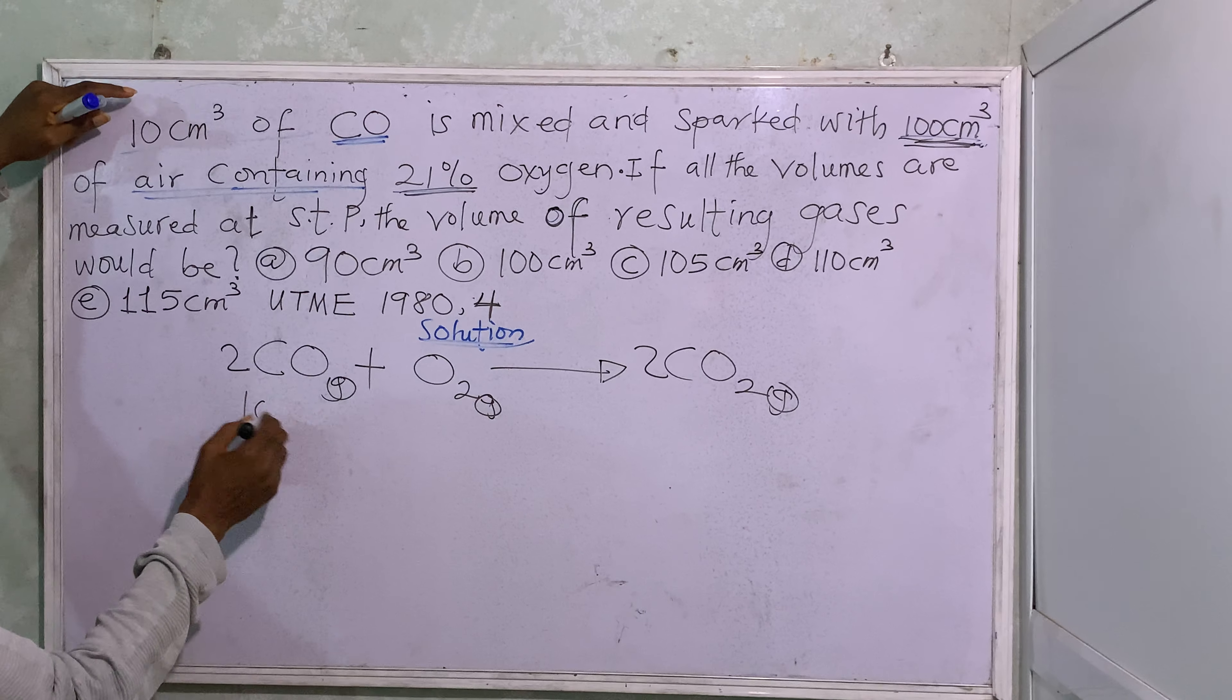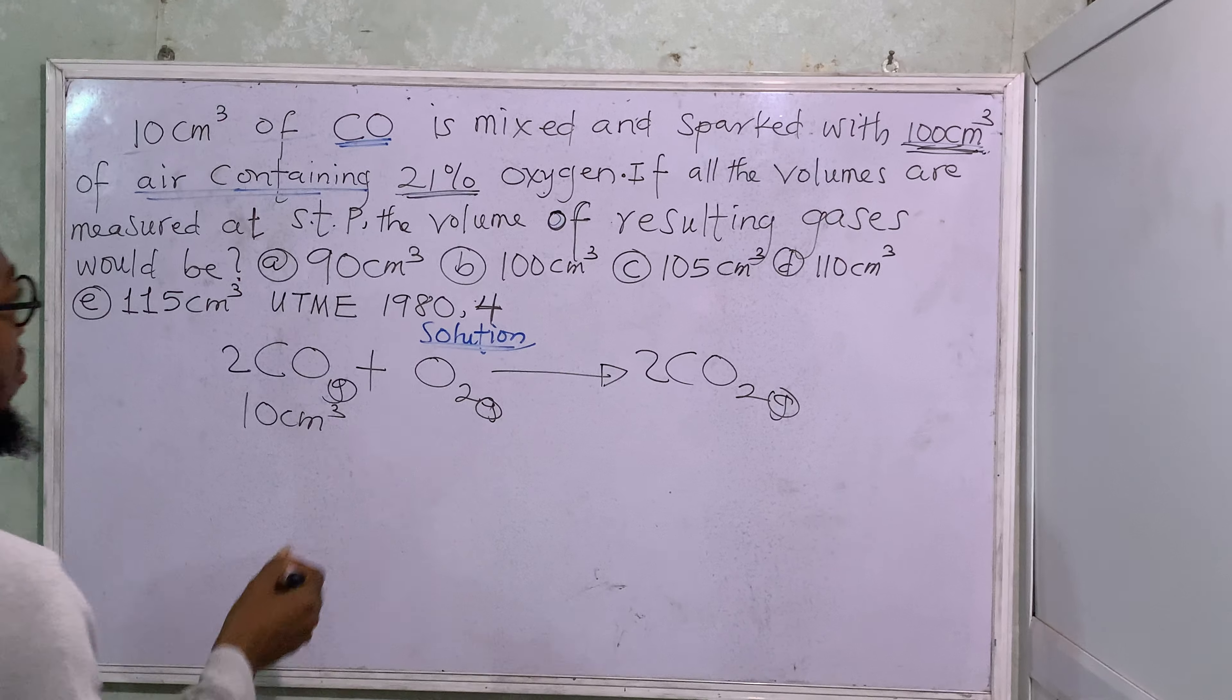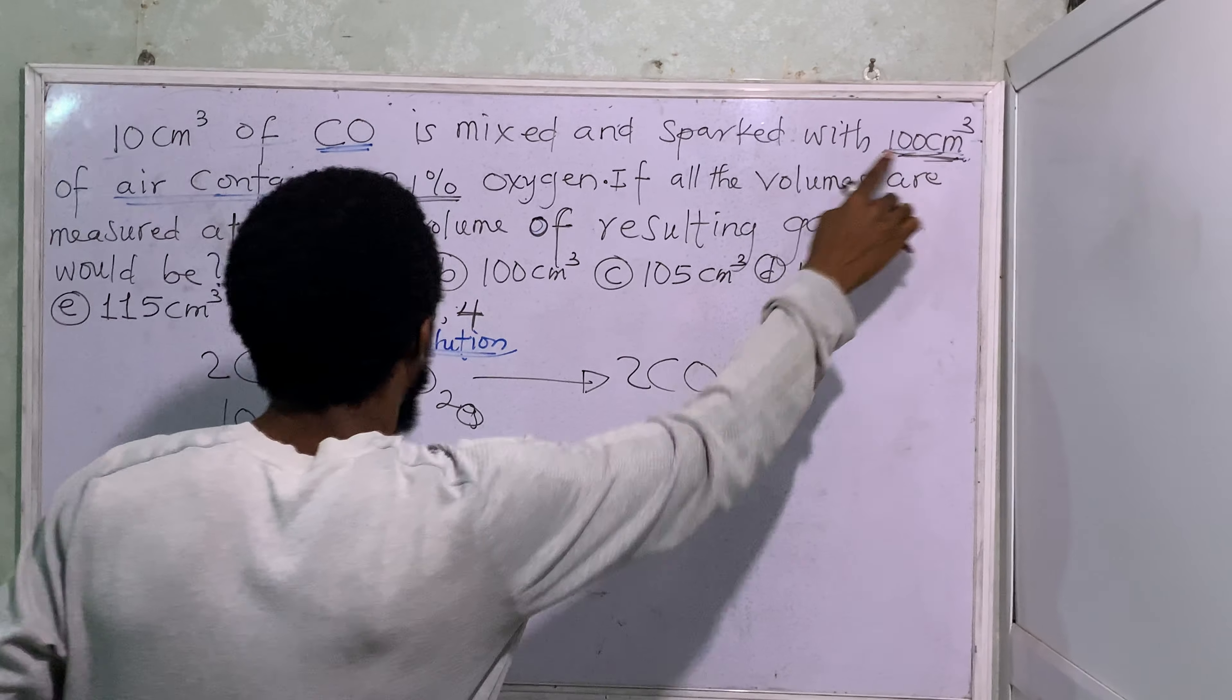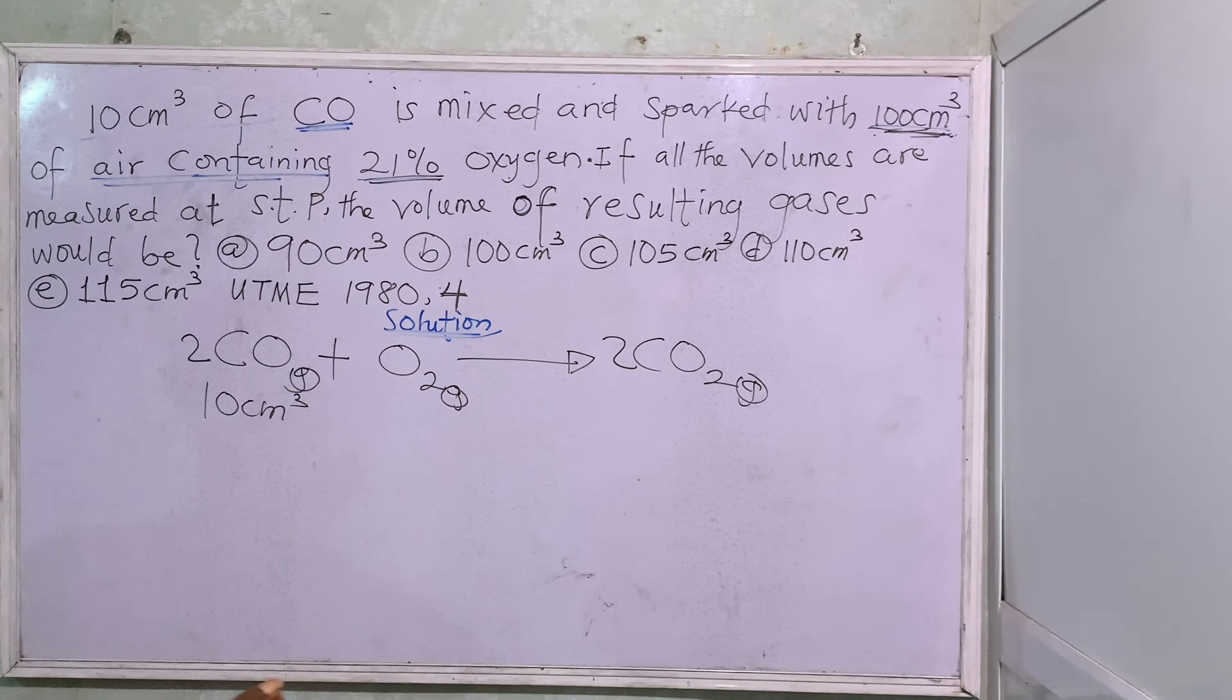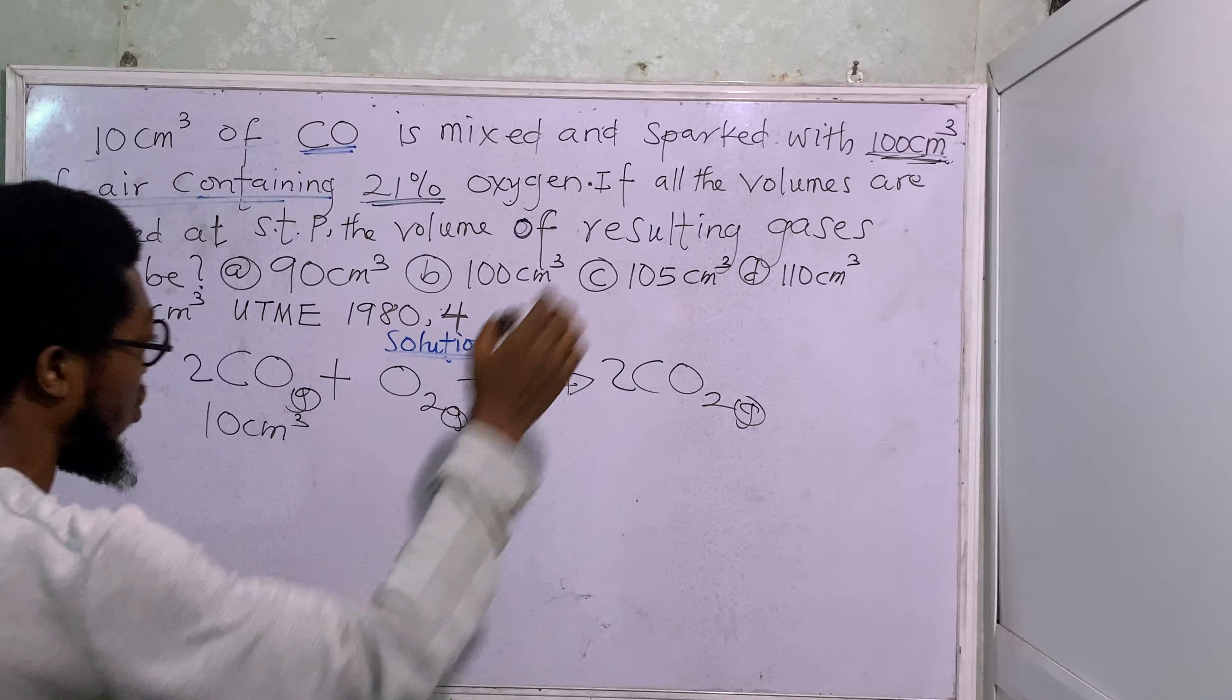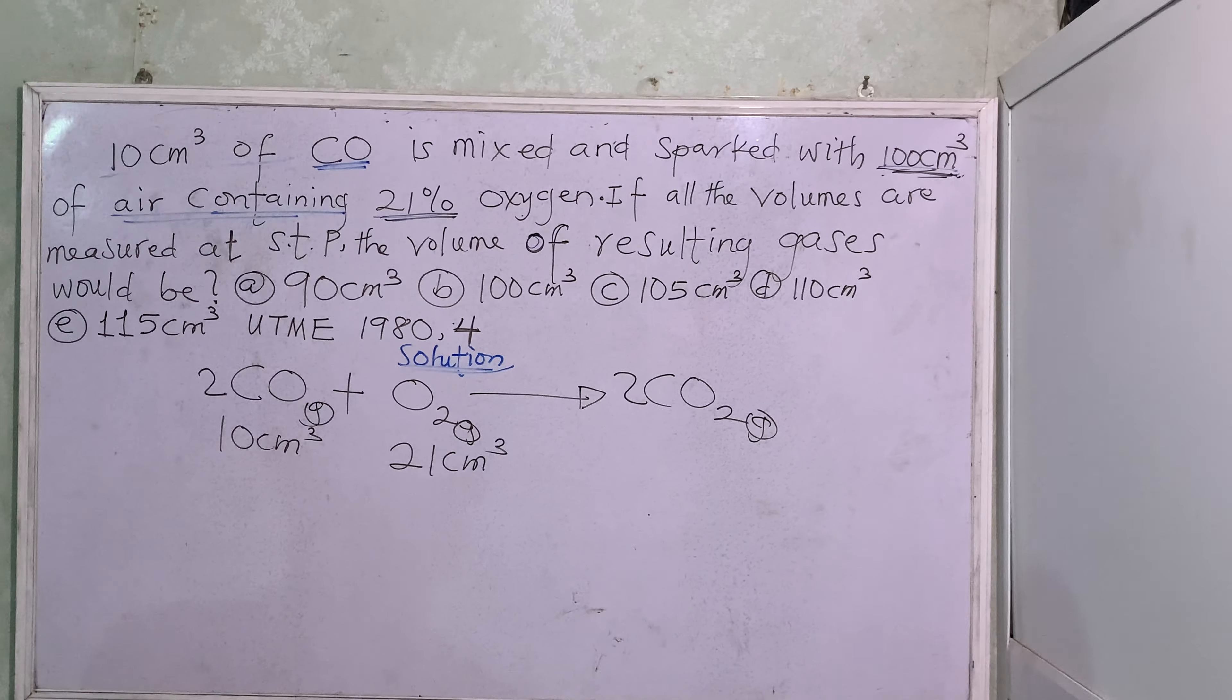How many cm³ of CO do we have? 10 cm³. Then, how many cm³ of oxygen do we have? Well, we have 100 cm³ of air. But out of that air, only 21% of it is oxygen. What is 21% of 100? It is 21. So therefore, the volume of oxygen here is 21 cm³.